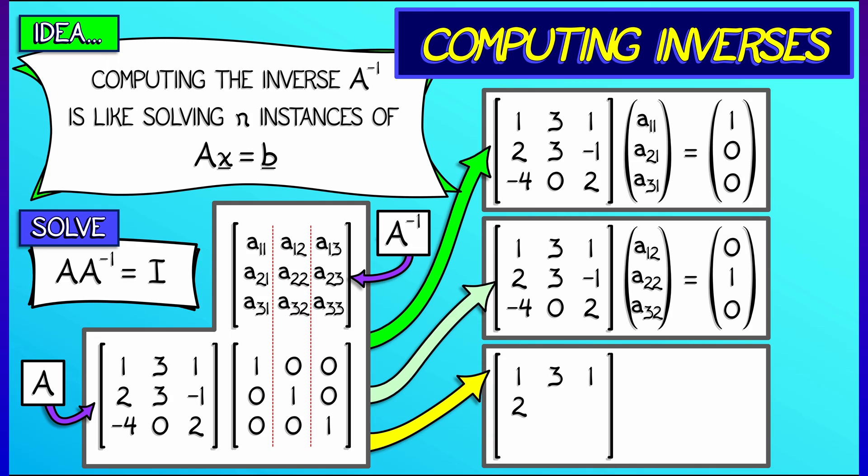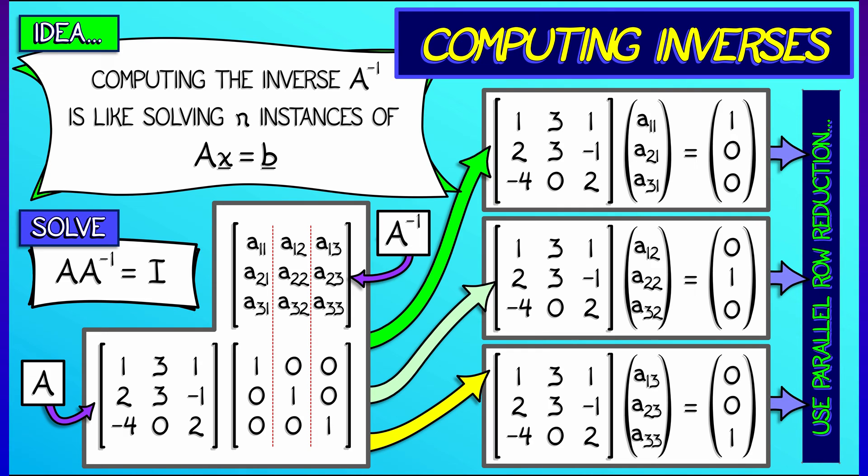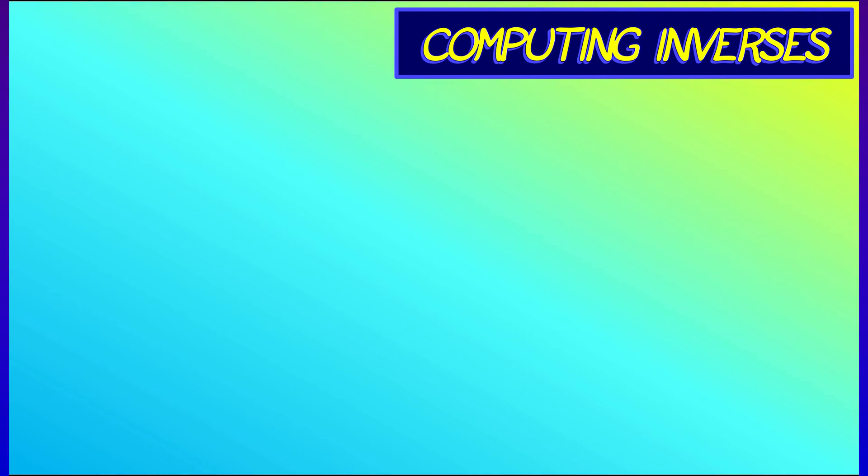And then times the second column is 0, 1, 0. And times the third column is 0, 0, 1. That's solving three instances of Ax equals b, where the b's are the three basis vectors. But now, instead of solving each one individually, we're going to solve them all at the same time using parallel row reduction. Let's see how that works.